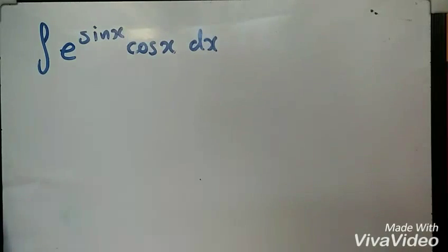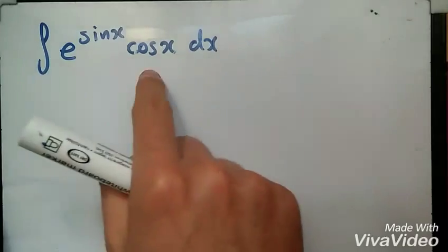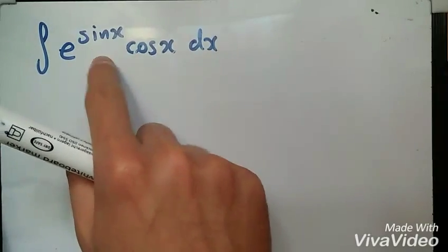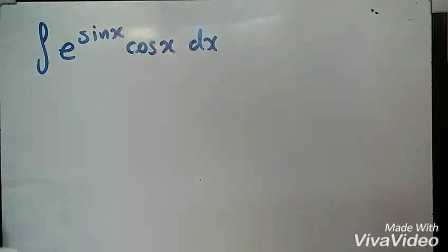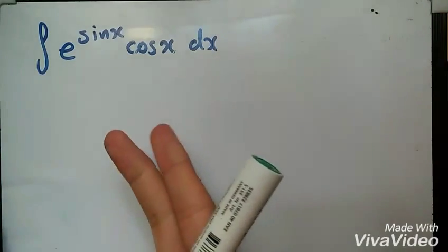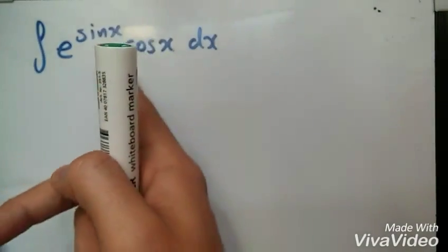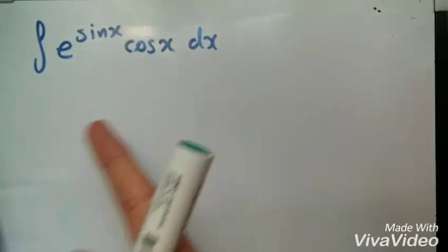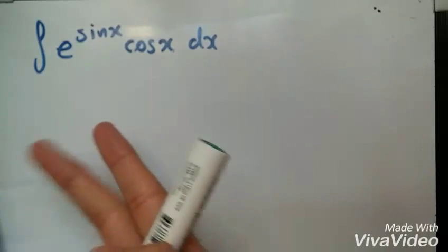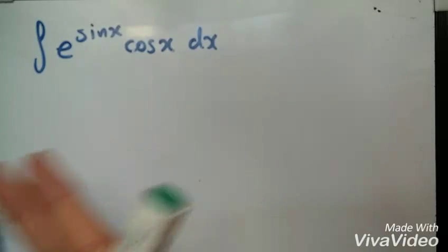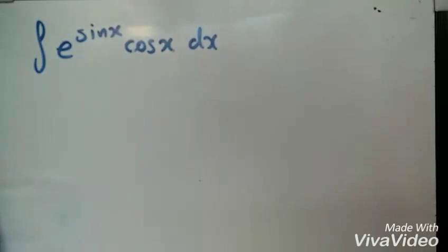Well, just look at this expression. We can see that sin x and cos x are the derivatives and anti-derivatives of each other. In other words, differentiating one will give you the plus or minus of the other. So they're actually perfectly linked — this is actually an easy question, believe it or not.